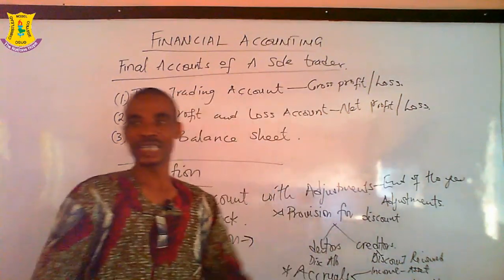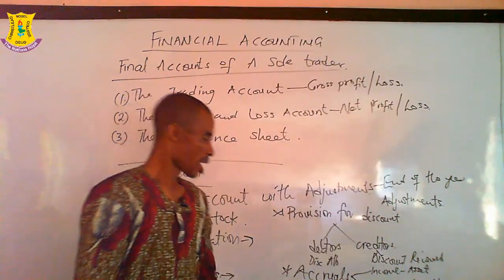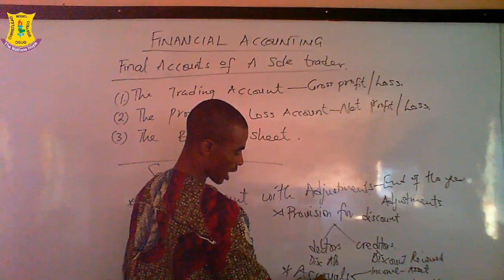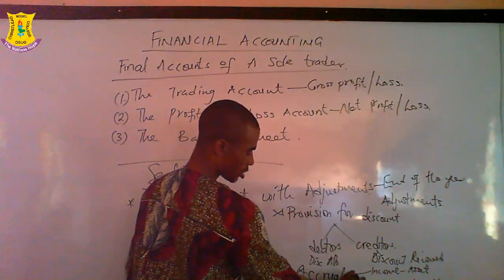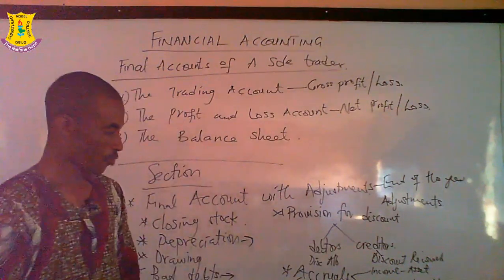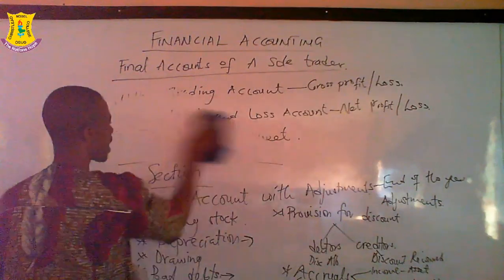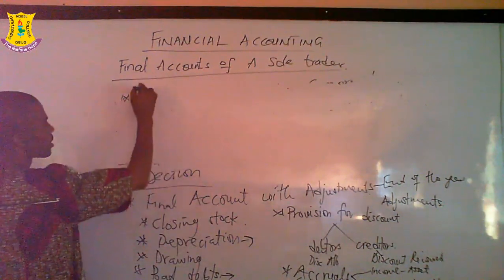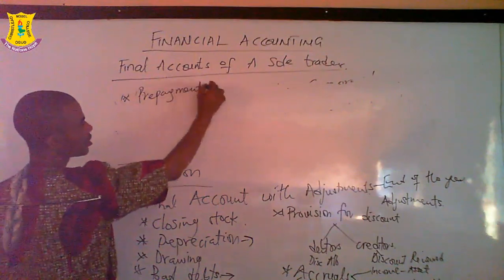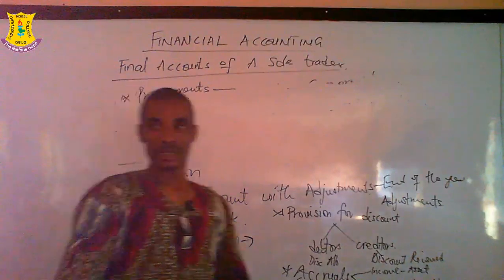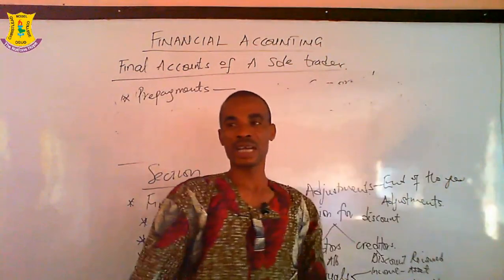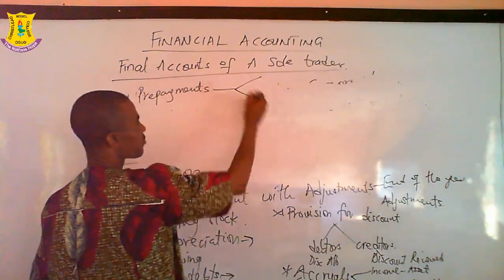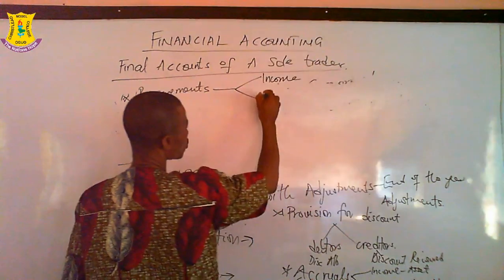When you receive money and you know that money does not belong to you — it's going out — that is an accrual. Another word for accruals is 'owing', 'outstanding', and so on. Finally, we have prepayments, which means money paid in advance. For example, you are asked to pay one naira but you give the person five naira — the extra money is paid ahead.